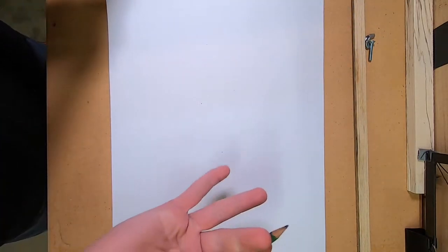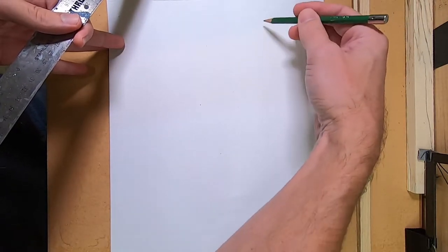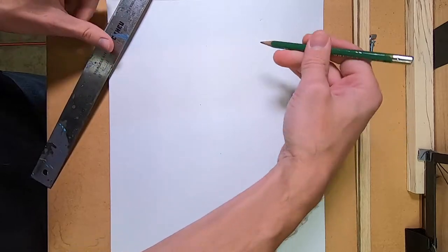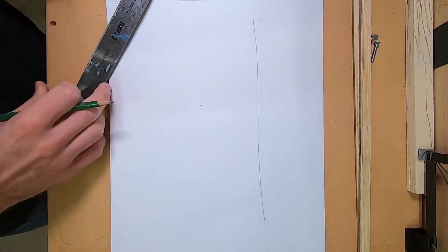A ruler is one approach, or I can find a straight edge like the edge of my paper and use my finger as a guide, and then I can just draw a straight line right off the edge of my paper.